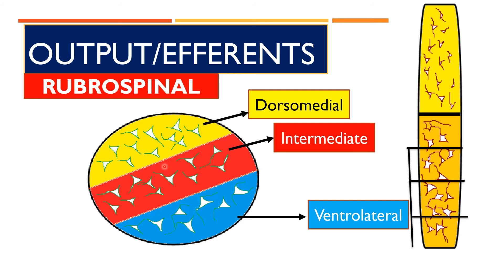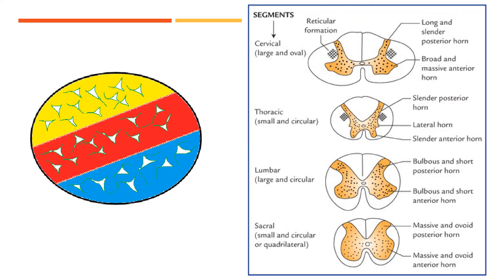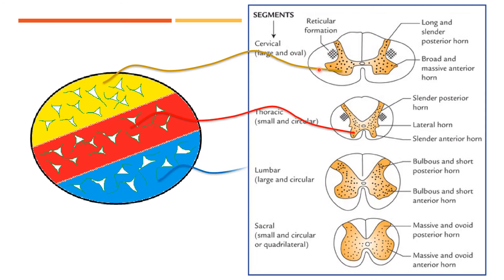Regarding the rubrospinal fibers: the dorsomedial area projects to the cervical segments, the intermediate fibers reach the thoracic segments, and the ventrolateral fibers reach the lumbar and sacral segments. These are the three different output areas of the magnocellular part of the red nucleus.